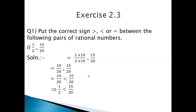To repeat part 1: you are given denominators 2 and 20. Multiply 1/2 by 10/10 to get 10/20, and keep 15/20 as it is. Since 15 is greater than 10, the sign opens to 15. So 15/20 > 10/20, which implies 1/2 < 15/20, or equivalently 15/20 > 1/2.